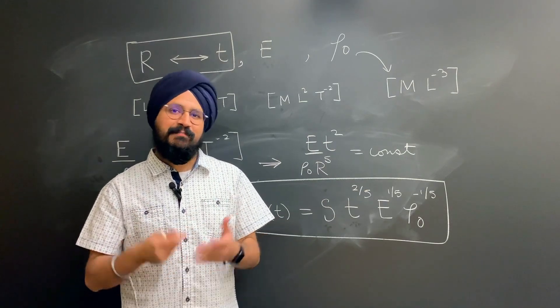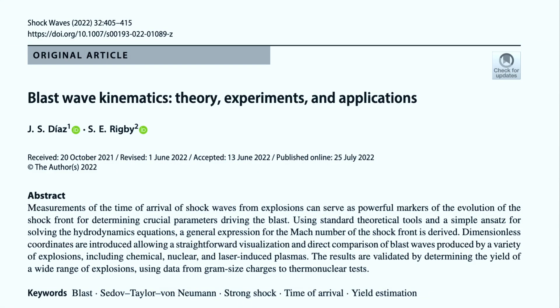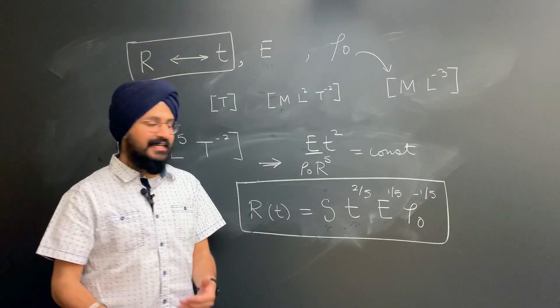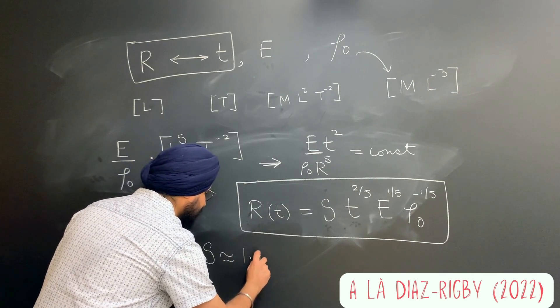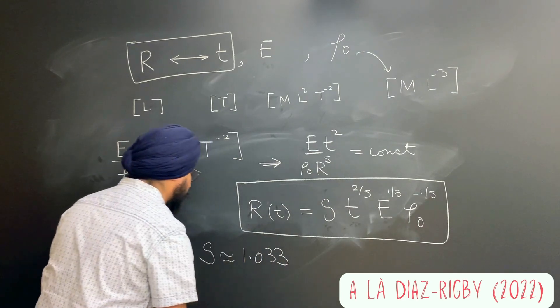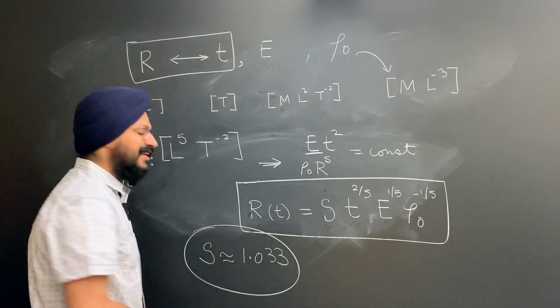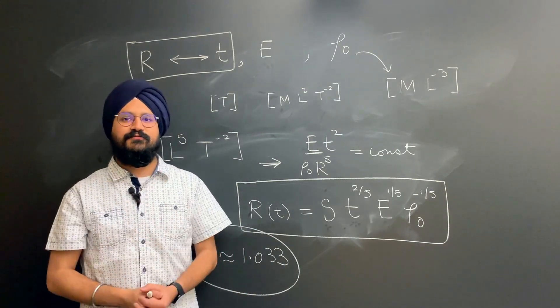Recently, a paper published by Jorge Diaz and Samuel Rigby made better estimates about this dimensionless number s, and they came up with s to be about 1.033 for normal air. And we're going to use that in our calculation going further.